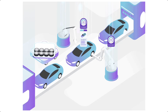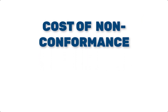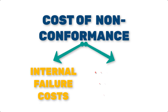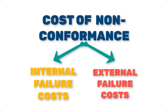Now, let's discuss the cost of non-conformance. This is the money spent when things go wrong — when the product or service doesn't meet quality standards. It includes two parts: number one, internal failure costs, and number two, external failure costs. Internal failure costs refer to defects found before the product is delivered, such as reworks, scrap, or downtime. External failure costs are much worse, like refunds, product recalls, or even lawsuits caused by defects reaching the customer.